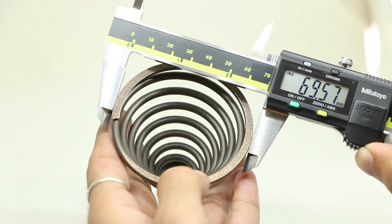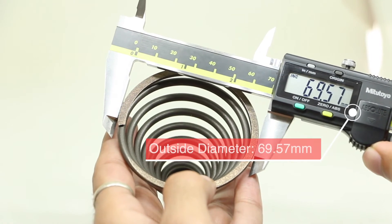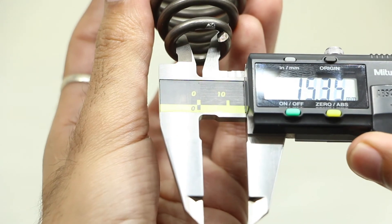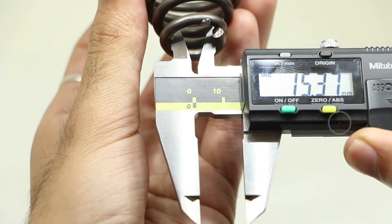In fourth instance we have conical compression spring. Its outside diameter, OD, is 69.57 mm. And inside diameter of the smaller side is 15.37 mm.